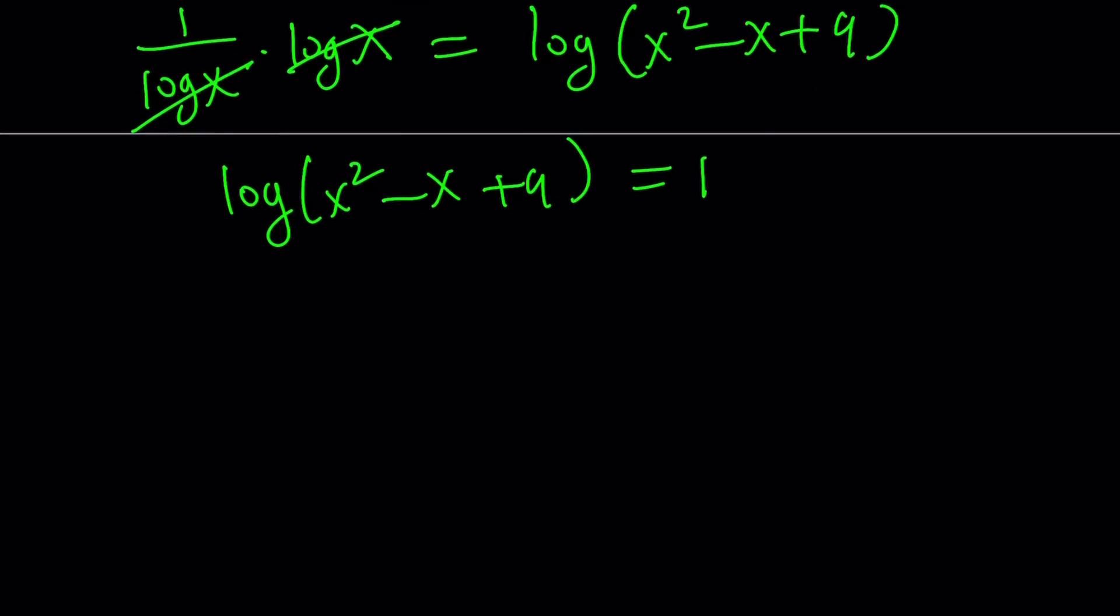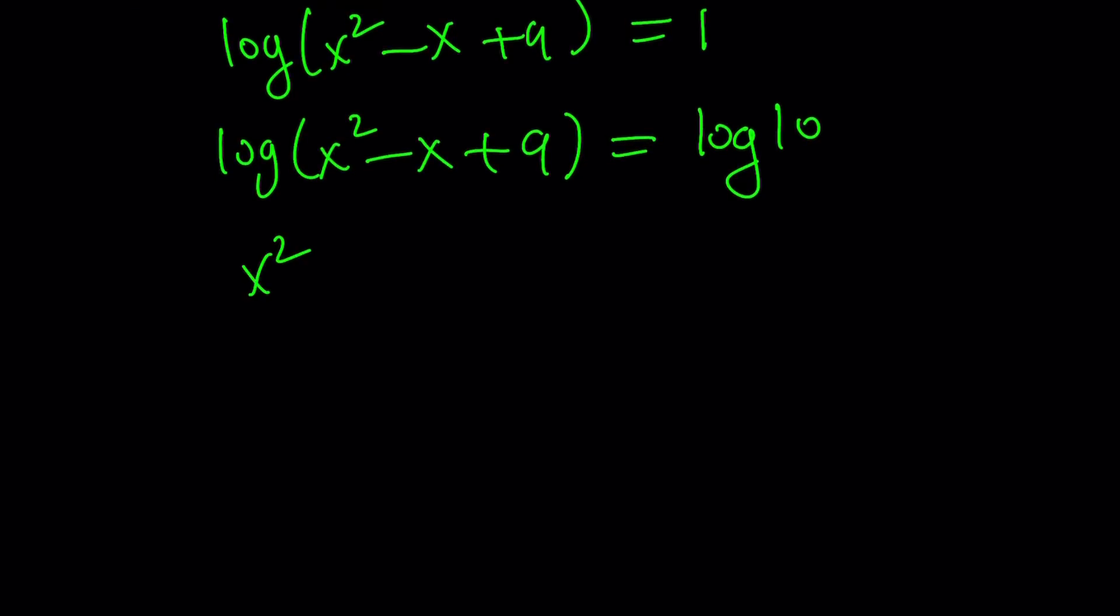So now, by using definition of logarithms, I can actually say that this parabola or quadratic is equal to 10 to the first power. Or if you are familiar with logs, you can replace one with log 10. Since the base is 10, log 10 is always going to be 1. Now, since I have two logs that are equal and log is an increasing function, depending on the base, of course, but with base 10, it's going to be 1 to 1. And this implies x squared minus x plus 9 is equal to 10.